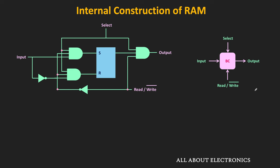In this circuit, when the select input is 0, the latch will remain in the same state because both S and R inputs are 0, and the output will also remain 0. When the select pin is logic 1, the latch gets enabled, and depending on the read-write signal, either the input will be stored in the latch or the stored data will be put on the output side.